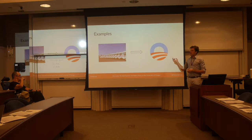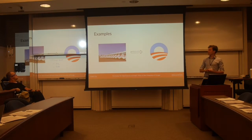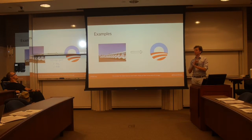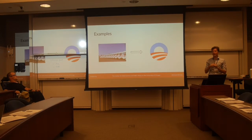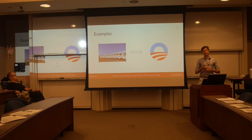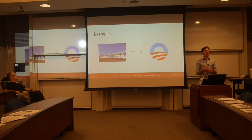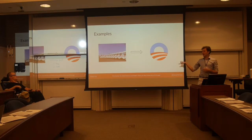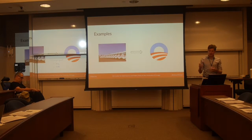Another example is the Obama 2012 campaign. Instead of mass-mailing everybody, they built two models. The first: is this person likely to vote for Obama already? If so, no need to contact them — waste of money. The second scored your probability of being swayable, because if you're a diehard Republican, that's also a waste of money. They only targeted people with a high probability of not voting for the right candidate yet, but who could be convinced. Very granular interventions.